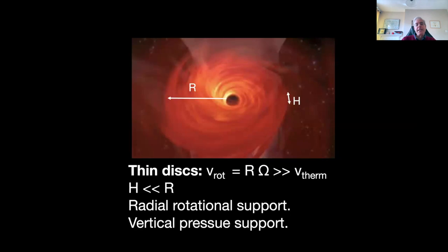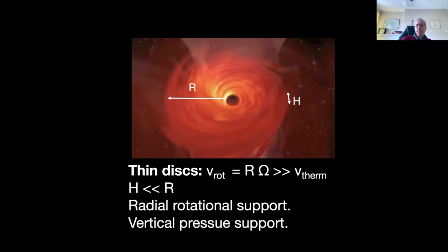Nevertheless, these are of course the fundamental basic property or the basic model of disks that people use are still called to this day Shakura and Sunyayev disks. The idea is that the disk is thin so that it is rotationally supported. That means that the rotational velocity, this r times omega, which you see here, that is a very large velocity compared to the speed of sound or the thermal velocity of the gas itself. And correspondingly, the disk thickness h is very small compared to the radial location.